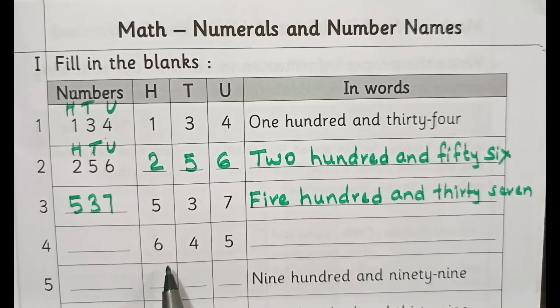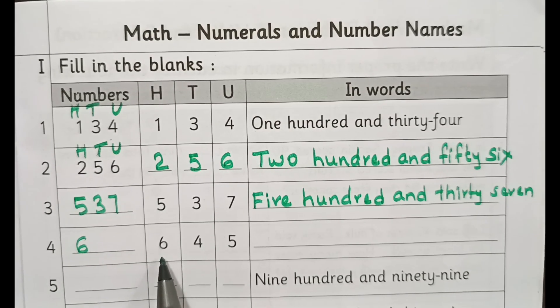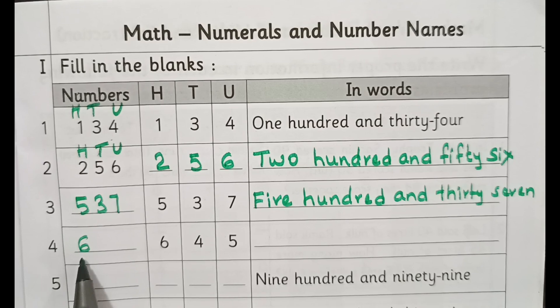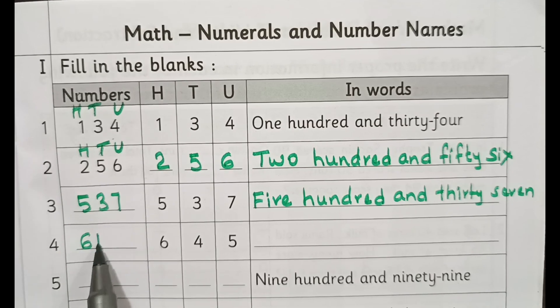This also, six hundreds, four tens, five units. The number will be six hundred and forty-five.